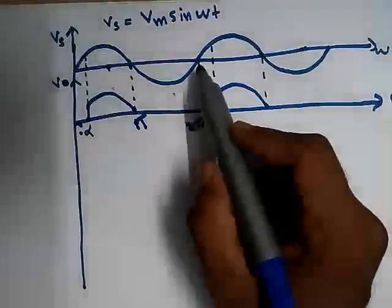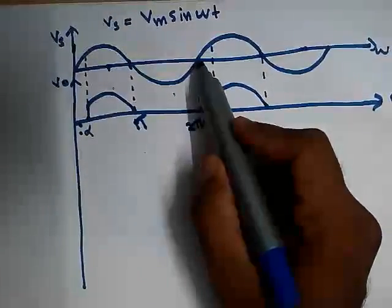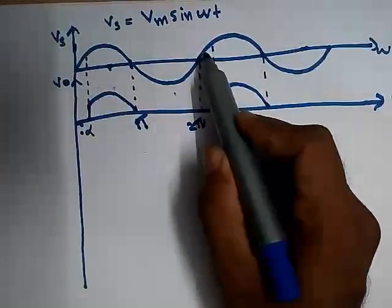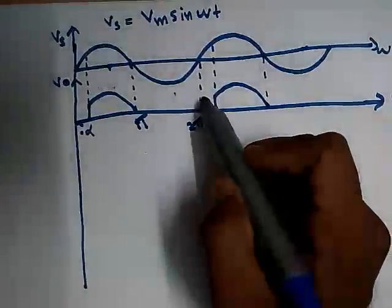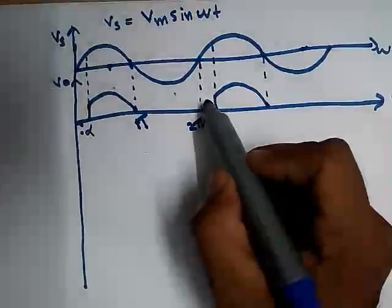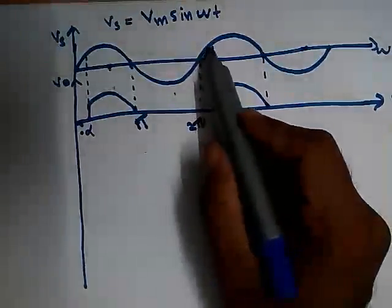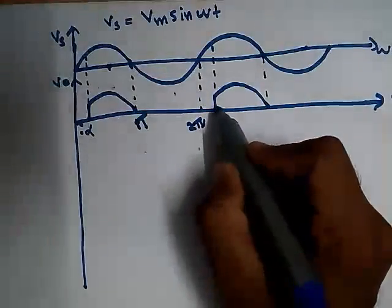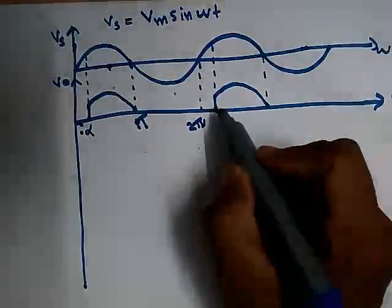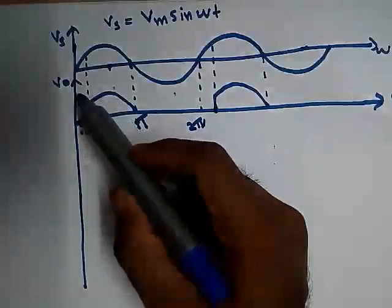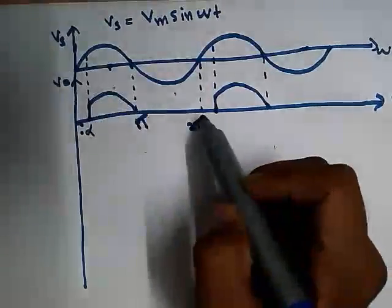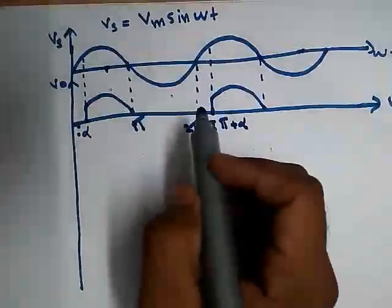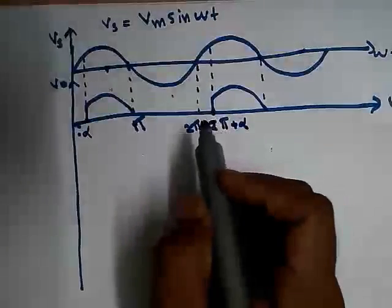After 2pi, the voltage across the thyristor becomes forward biased again. Since the thyristor is not triggered yet, it will be in forward blocking mode. So up to 2pi plus alpha, the voltage across the output resistor is 0. This process continues for the thyristor with R load.